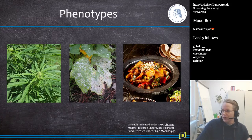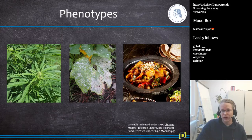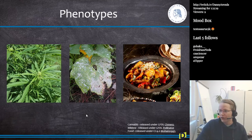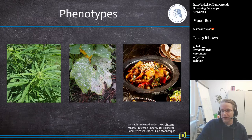So phenotypes — we talked about this. Here we see some examples of phenotypes. A phenotype is, for example, the amount of cannabis you get from a cannabis plant, or the quality. Another economically important phenotype is mildew — so whether your plant is susceptible to mildew or not. The susceptibility to a pathogen is also a phenotype.